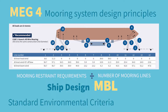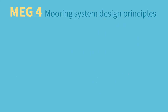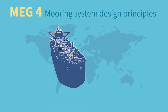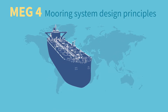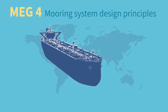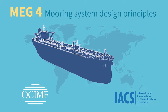The ship design MBL is the core parameter against which all other components of a ship's mooring system are sized and designed. Note that designing a ship to the OCIMF standard environmental criteria is in addition to IACS minimum requirements.